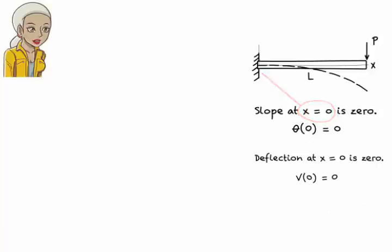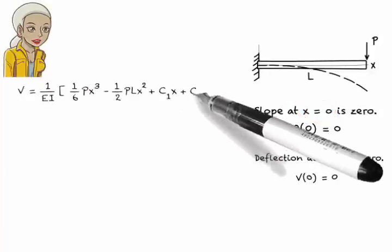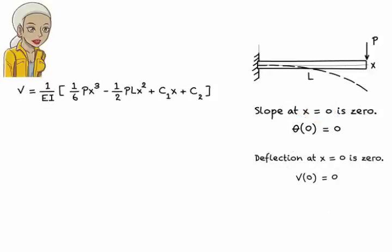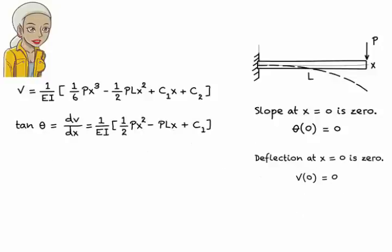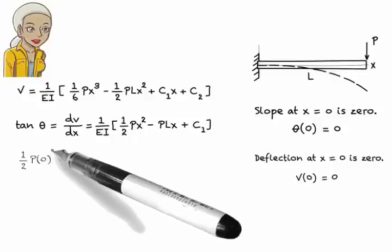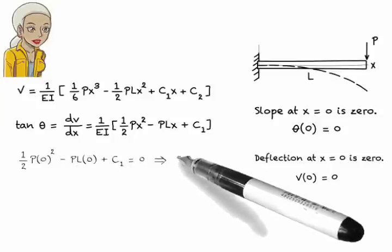Here is the deflection equation. The slope equation, which can easily be obtained by taking the derivative of v with respect to x. So, at x equals 0, slope is 0. Therefore, c1 must be 0.